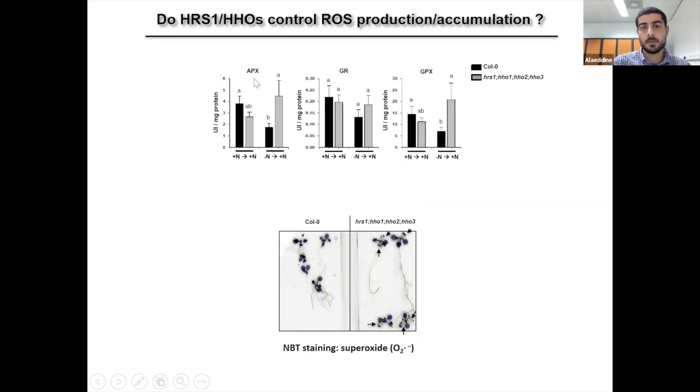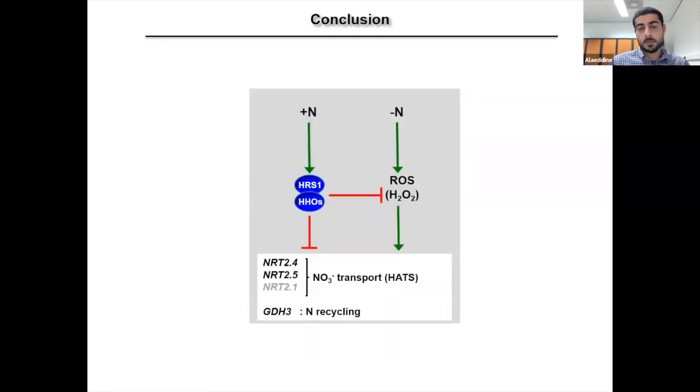So we finally measured the activity of detoxifying enzymes, such as peroxidases. And we found that they are derepressed in the quadruple mutant, which is consistent with less accumulation of superoxide, as you can see here with NBT staining. So, in conclusion, at minus N conditions, reactive oxygen species are produced and are needed for the nitrogen starvation response establishment. Then, when nitrogen is applied, HRS1 transcription factor and its homologues are rapidly induced in order to repress this response.